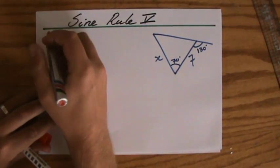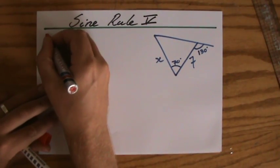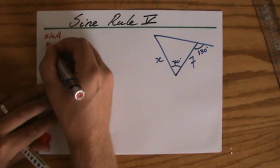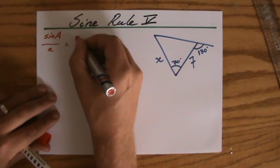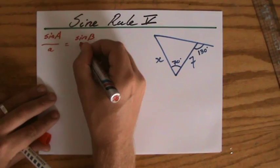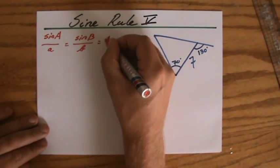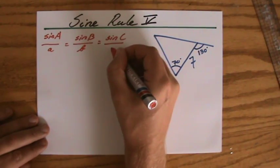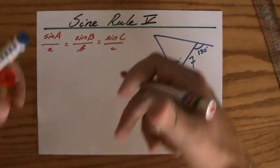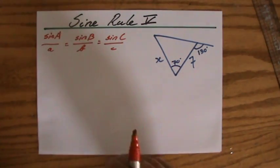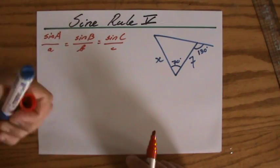And the sine rule says, the sine of A over its teammate length is the same as the sine of B over its teammate length. It's the same as the sine of C over its teammate length. Or I could turn it around, I say that A over the sine of A equals B over the sine of B.